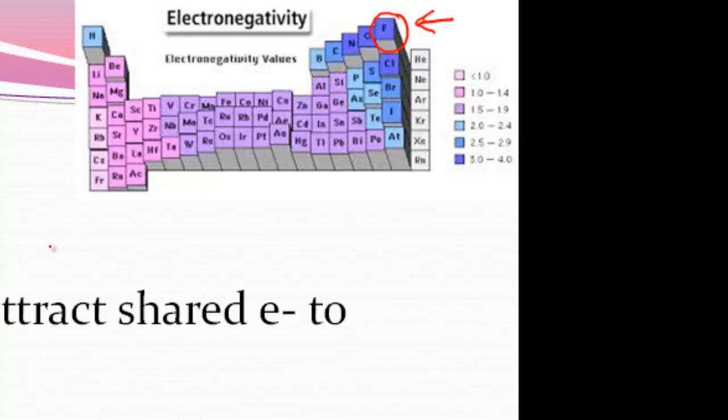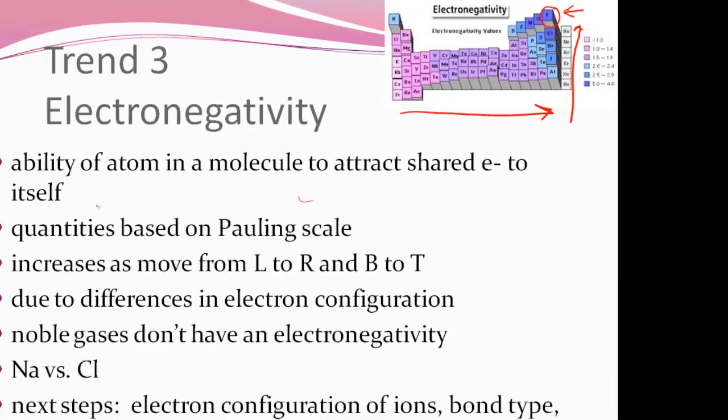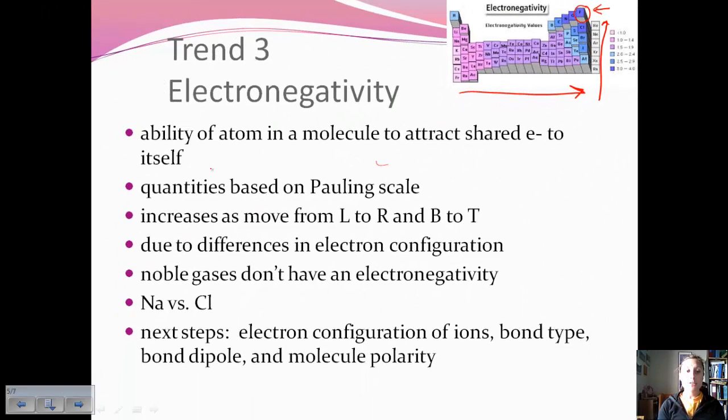Electronegativity increases as we move from left to right and as we go from bottom to top. As you can see, this is like a periodic table bar graph. And so you can see that the fluorine has a much higher electronegativity than other elements, especially to the left and lower. These differences are due to electron configuration. And if you'll notice, we're missing, or they're here but they're not really part of the scale, the noble gases.